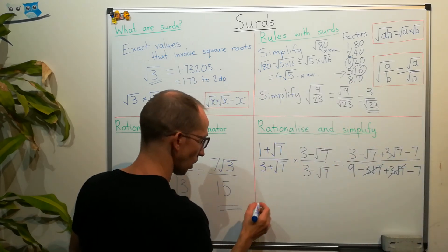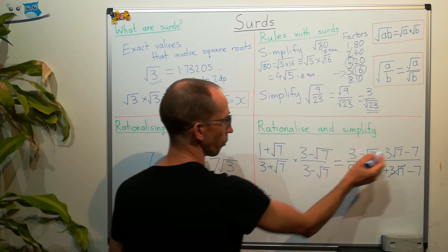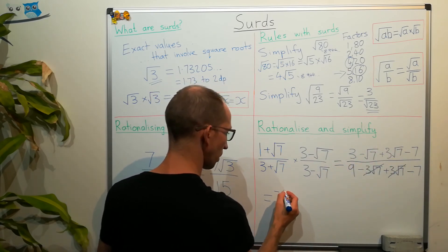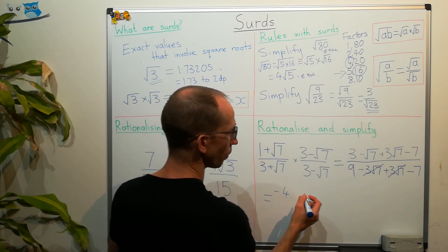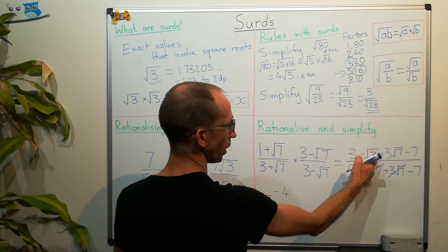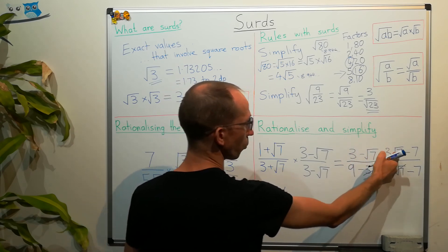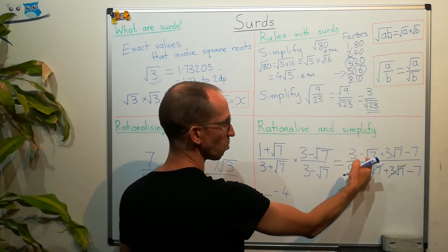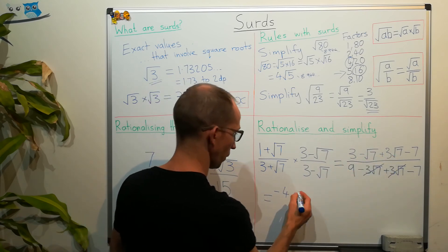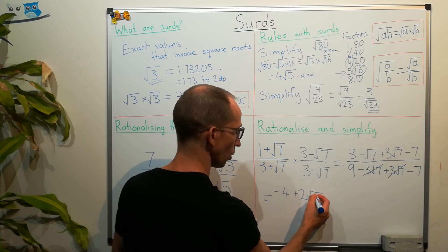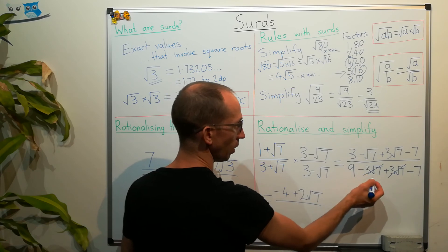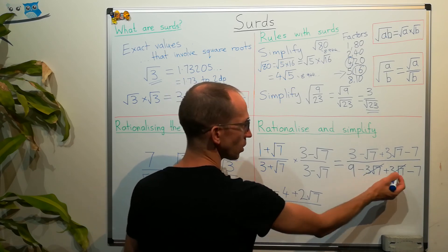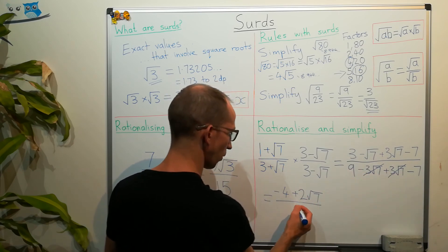On the top, we've got 3 minus 7, so that's going to be minus 4. And then we've got minus root 7 plus 3 root 7s. So, this is minus 1 plus 3, which is plus 2 lots of root 7. And down here in the denominator, well, these two cancel out, so we've got 9 minus 7, which is equal to 2.